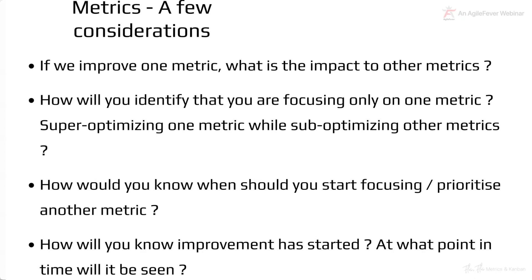A few more considerations: if you had to improve one metric, how will that one metric impact the other metrics you are capturing? How will you identify that you are focusing only on one metric and not over-optimizing it while sub-optimizing others? How would you know when you should start prioritizing any one metric, and how will you know when improvement has started? If you don't have answers to these questions, don't get into metrics tracking or optimization yet.